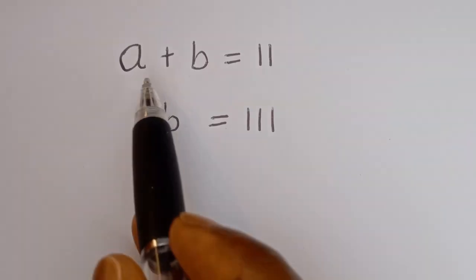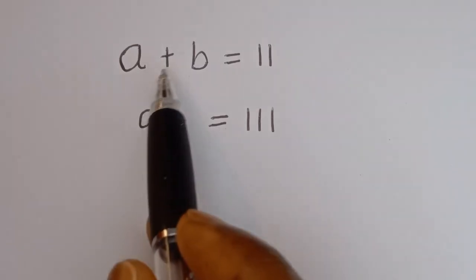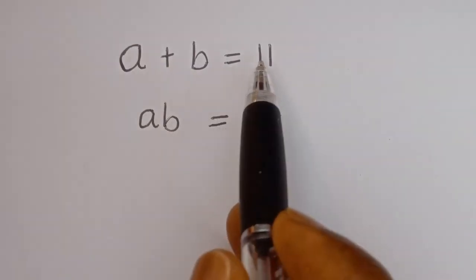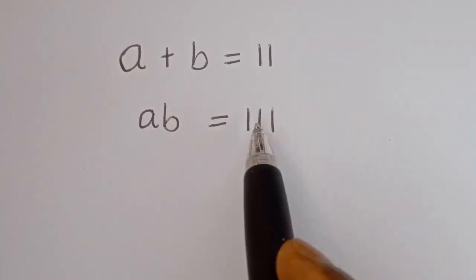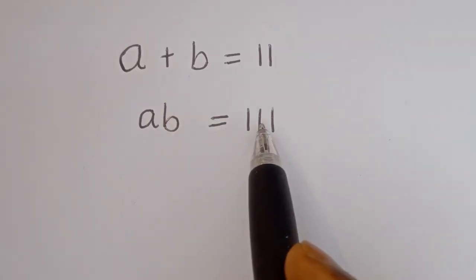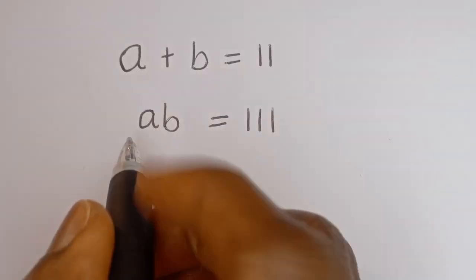Hello, how to solve for A and B in this equation: A plus B is equal to 11, AB is equal to 111. Solution.